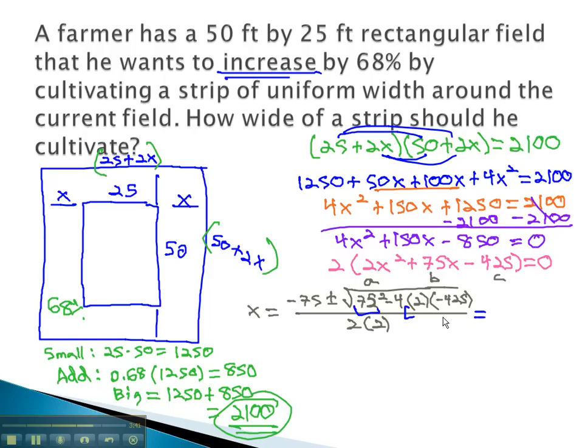Doing the exponents and the multiplication, we find out that x is equal to negative 75, plus or minus the square root of 5625, plus 3400, all over 4.